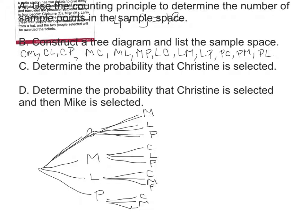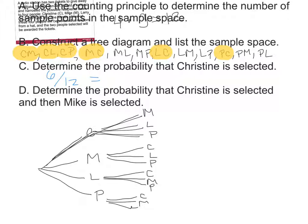Part C: Determine the probability that Christine is selected. Let's find all the ways Christine was selected: Christine-Mike, Christine-Larry, Christine-Phyllis, Mike-Christine, Larry-Christine, Phyllis-Christine. That's 6 different ways Christine gets selected out of 12 possibilities. So the probability that Christine gets selected is 6/12, or one-half — a 50% chance.